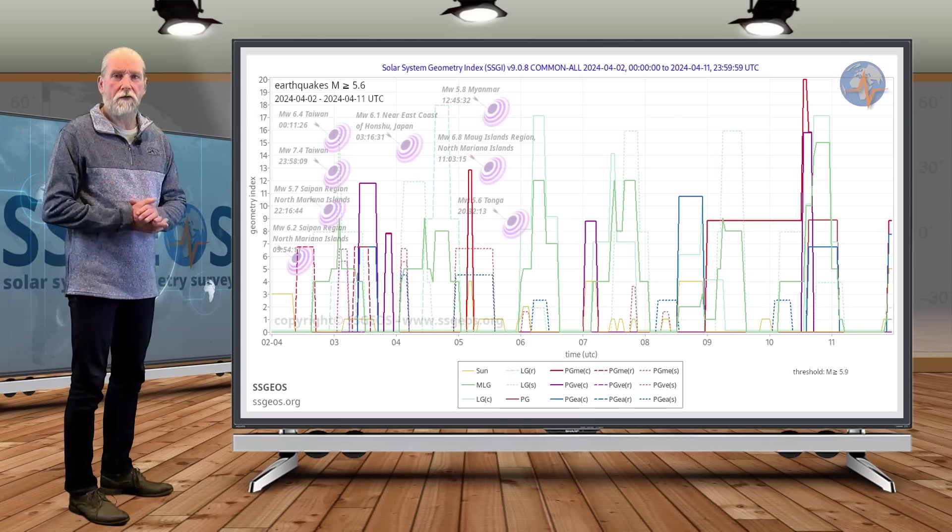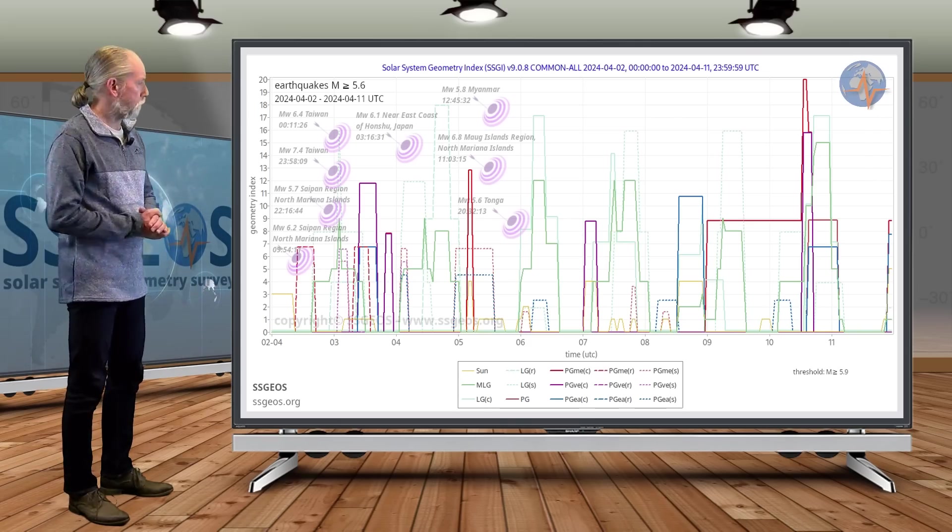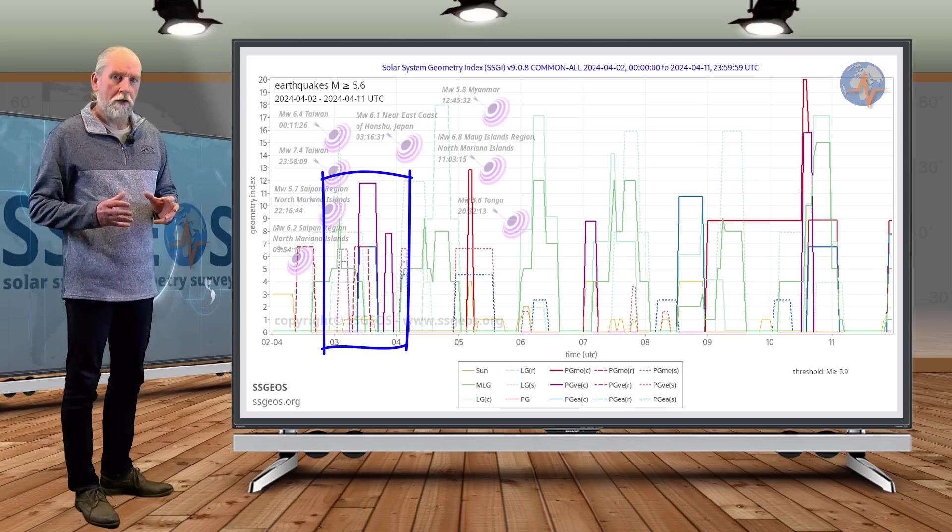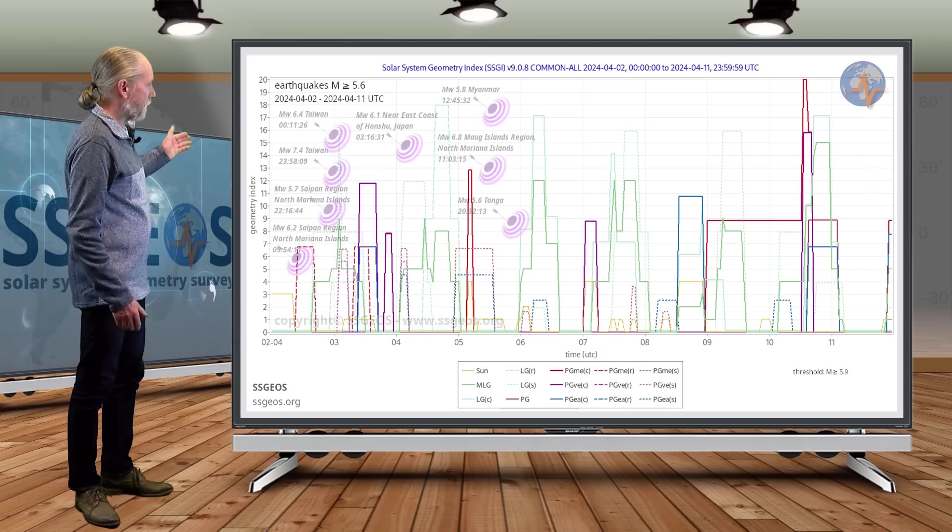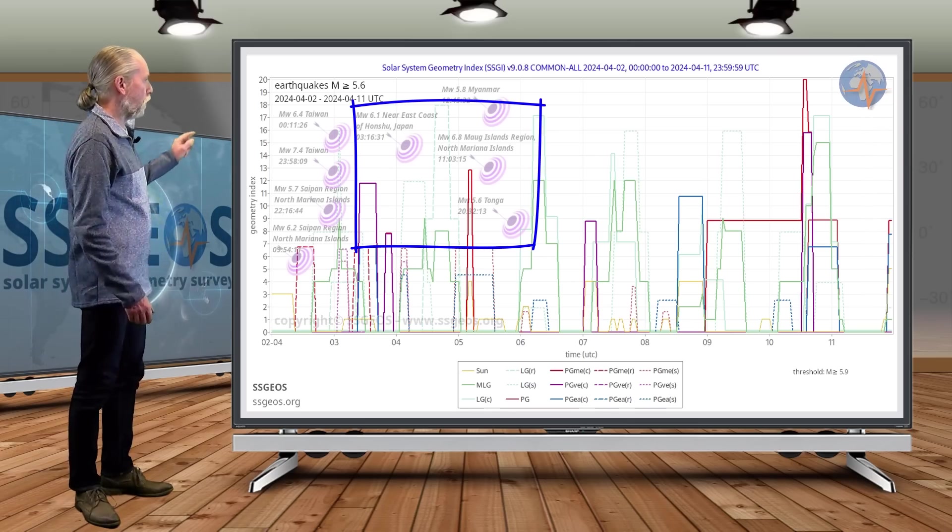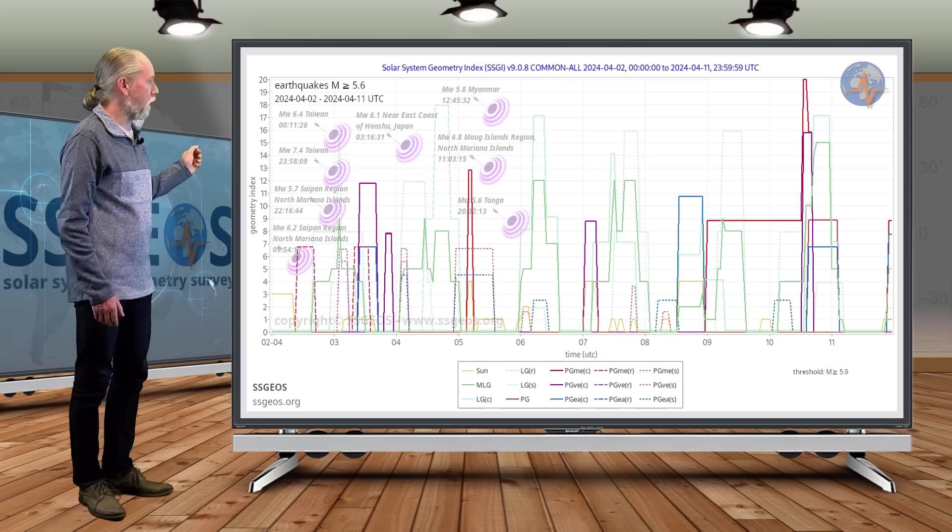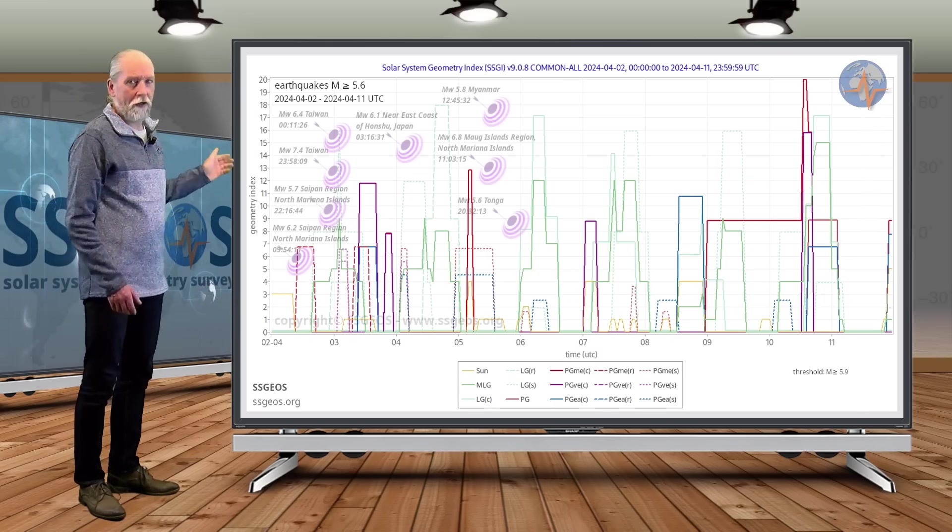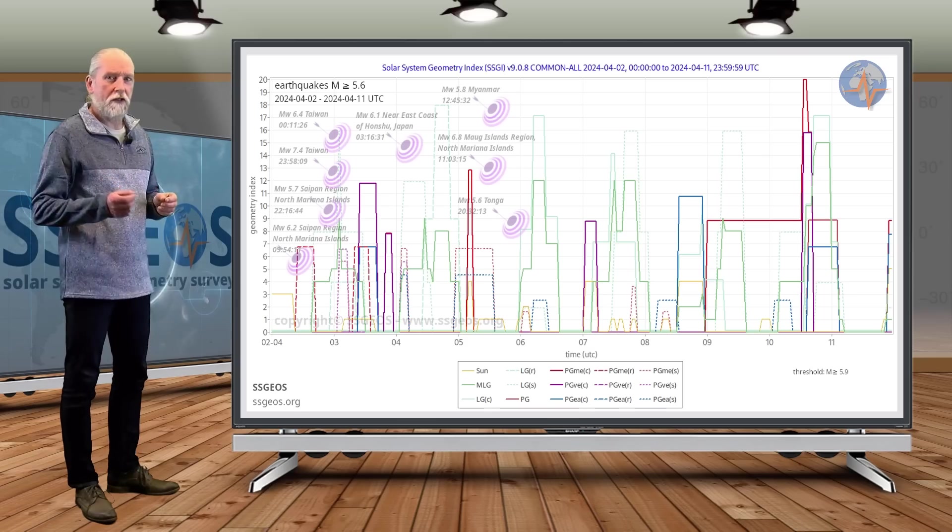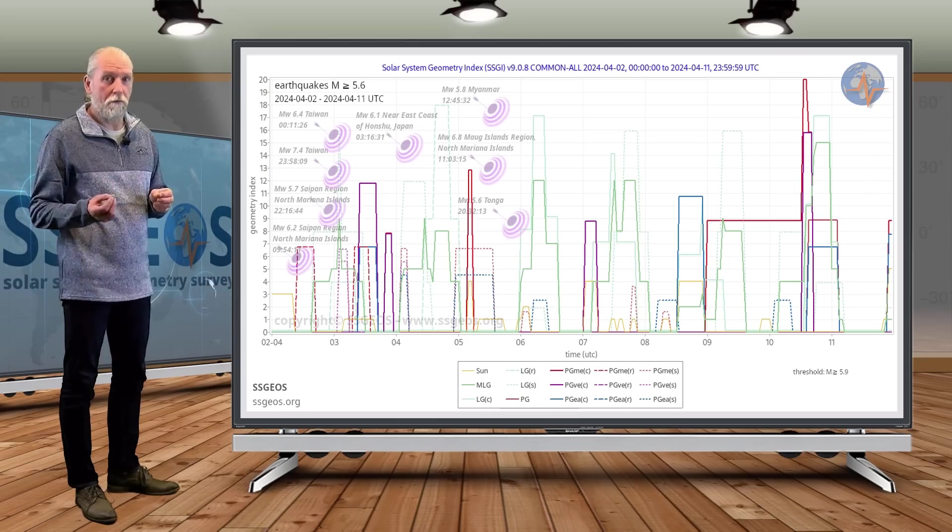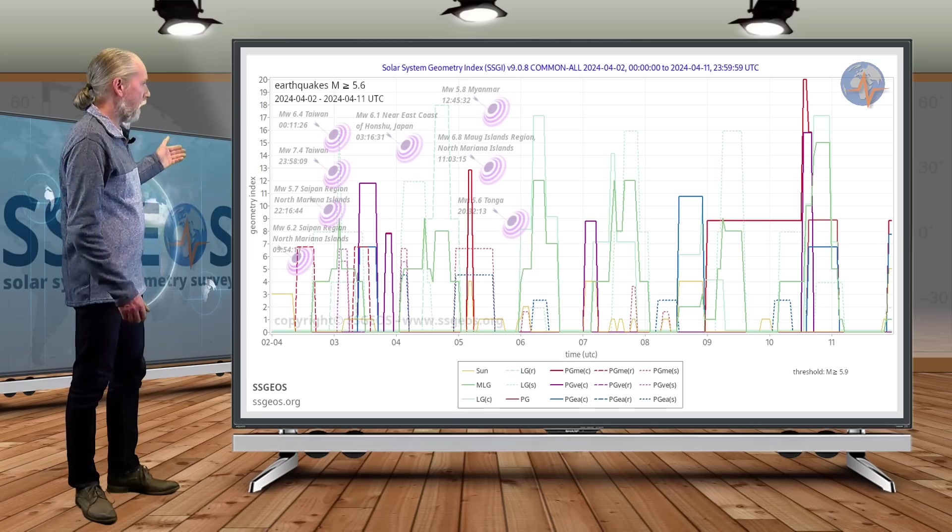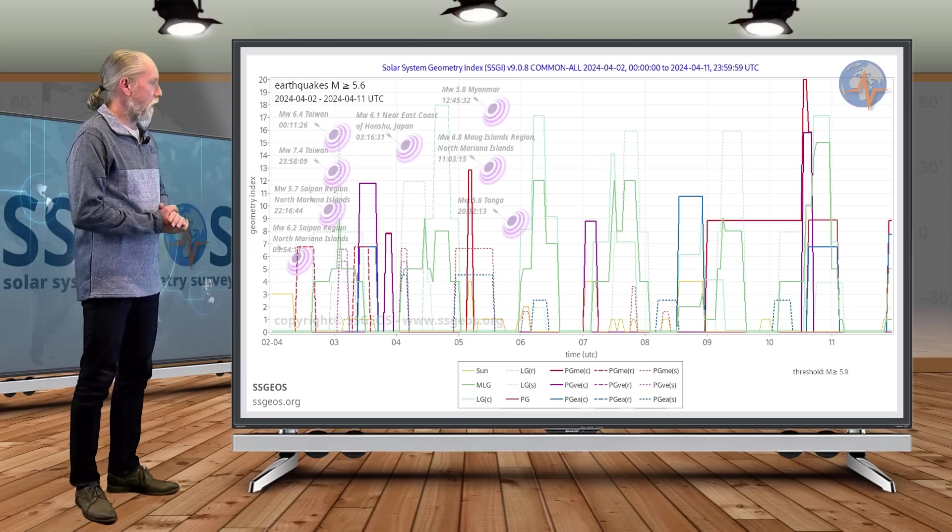You may want to look up that update from March 25th. We had a convergence of planetary conjunctions on the third and we see that there was a clustering of stronger tremors following that convergence. A 6.1 in Japan, 5.8 in Myanmar, 6.8 at the Mariana Islands. Remember on 4, 5 April, I suggested the possibility of a mid-high 6 to 7 magnitude earthquake. And indeed we had a 6.8. I mentioned that in the previous update. And then a 5.6 at Tonga late on the 5th.